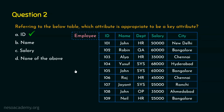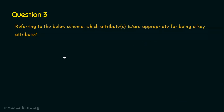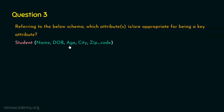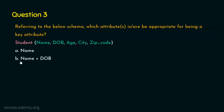Let's move on to question number three. Referring to the student relation, which contains attributes name, date of birth, age, city, and zip code — which attribute or attributes are appropriate for being a key attribute? The options are: Option A, name; Option B, name and date of birth; Option C, name and city; and Option D, none of the above.